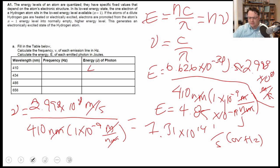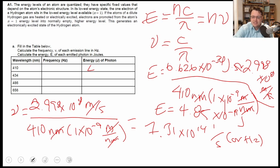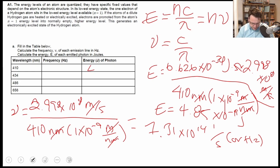One important thing always: make sure you're doing the dimensional analysis and checking how all the units cancel out. You do the same approach through all the emission lines.